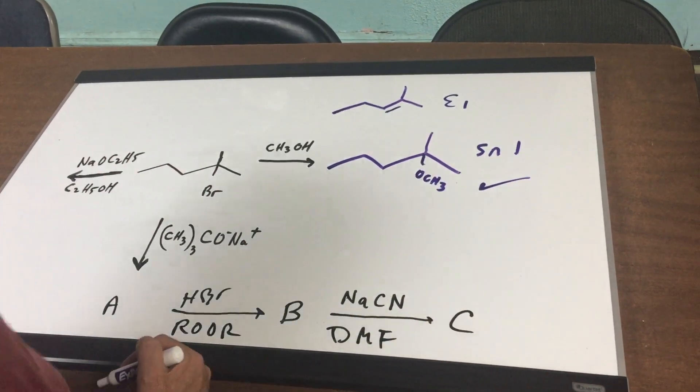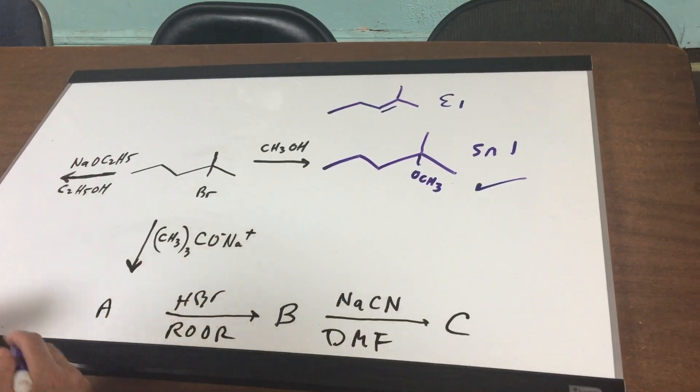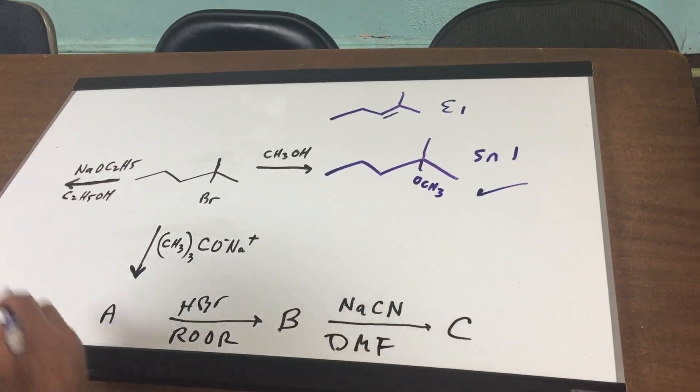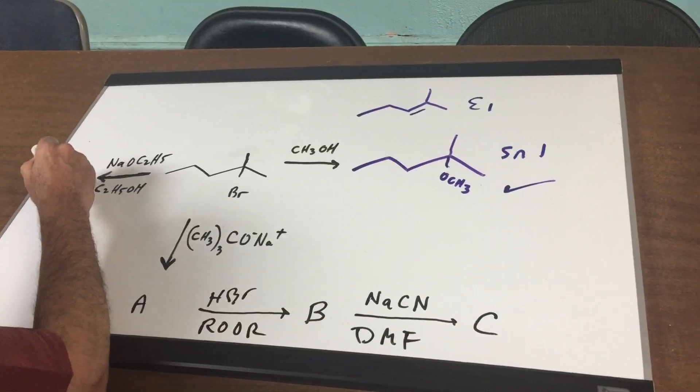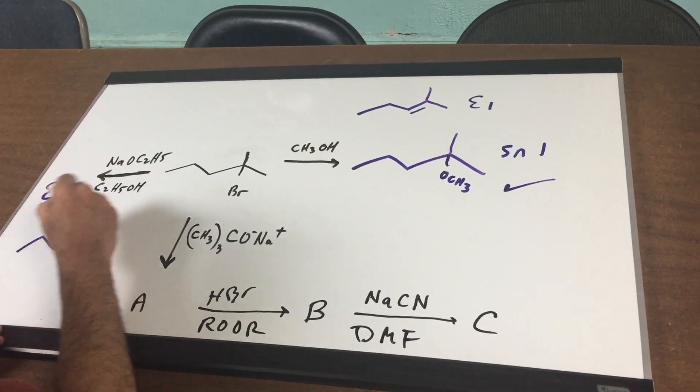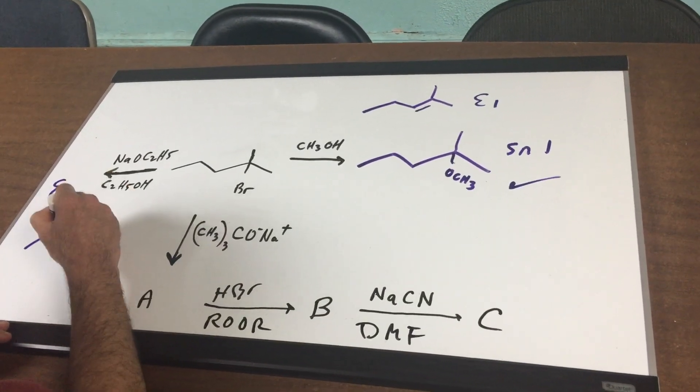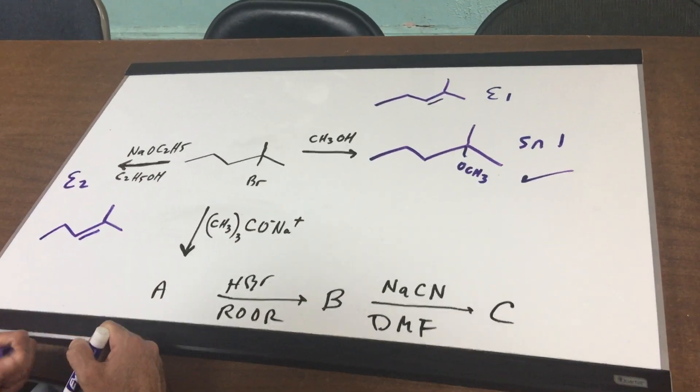In this next one, you have a tertiary halide with a very strong base. And once again, that's going to favor what we call the E2 mechanism. So on the E2 mechanism, once again, you are going to get the Zaitsev product.